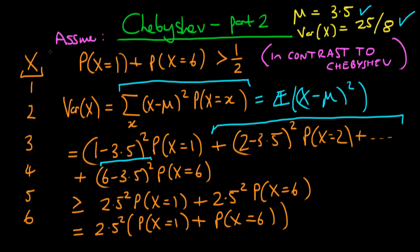And we've already made an assumption on the sum of the probability that x equals 1 plus the probability that x equals 6. We've assumed that that's greater than a half, which means that the variance of x has to be strictly greater than 2.5 squared, which is just 25 over 4 times a half, namely the variance of x has to be greater than 25 over 8.